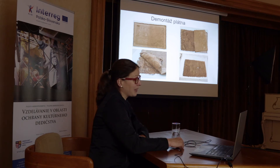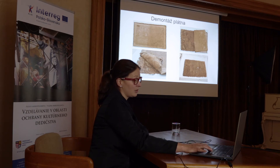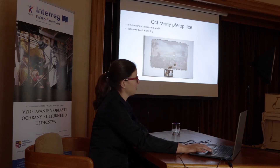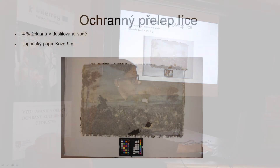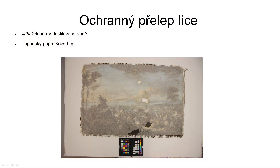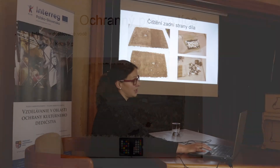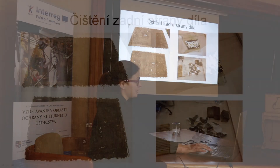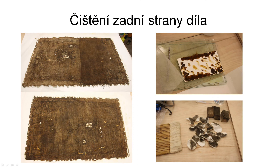Takže tam se jim dařilo a bylo nutné to plátno sejmout a očistit originální plátno. Bylo potřeba zpevnit barevnou vrstvu, udělat ochranný přelep a potom čistit zadní stranu. Zadní strana se čistila postupně. Je to málo vidět vizuálně, ale více se to vidí na pomocných materiálech – na různých filtračních papírech, do kterých odsáváte nečistoty, na různých pryžích, vatových tamponech a podobně.